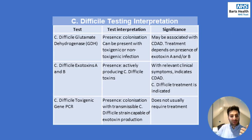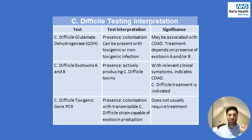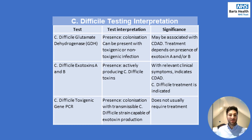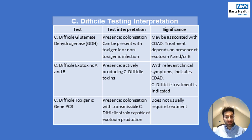Now, I mentioned previously that we would talk again about C. difficile toxin A and B, and that's important as we talk through the interpretation of C. difficile testing, which can sometimes be a little bit confusing. There are three tests that our laboratory uses. The first is C. difficile glutamate dehydrogenase, also known as GDH. If it is present in the stool, it means that the individual is colonised with C. difficile — that can be in active toxigenic disease or non-toxigenic infection. Whether or not you treat these patients depends on whether or not they have exotoxin A and/or B present in their stool too.